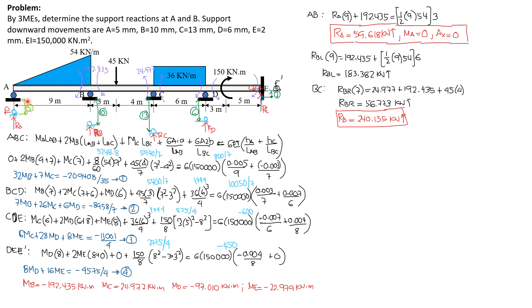Then summation moment about A equals 0, so RB left, the reaction just to the left of B, times 9, equals 192.435 plus the moment of the load, 1 half of 9 times 54, 2 thirds of 9 is 6. So RB left is 183.382 kN upward.